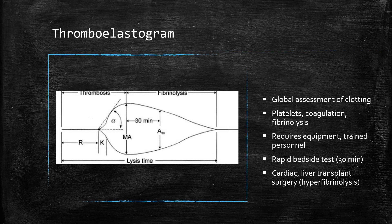The tests we just talked about all look at individual aspects of the clotting mechanism. The thromboelastogram is designed to take a more global or holistic view of the clotting mechanism — it's able to assess the system from end to end, evaluating platelet function, the coagulation cascade, and the fibrinolytic system all in one test. This test is not widely available; it requires specialized equipment and very trained personnel. It takes about 30 minutes and seems to have found its most use on cardiac surgery or liver transplant surgery services where hyperfibrinolysis is a particular clinical problem.